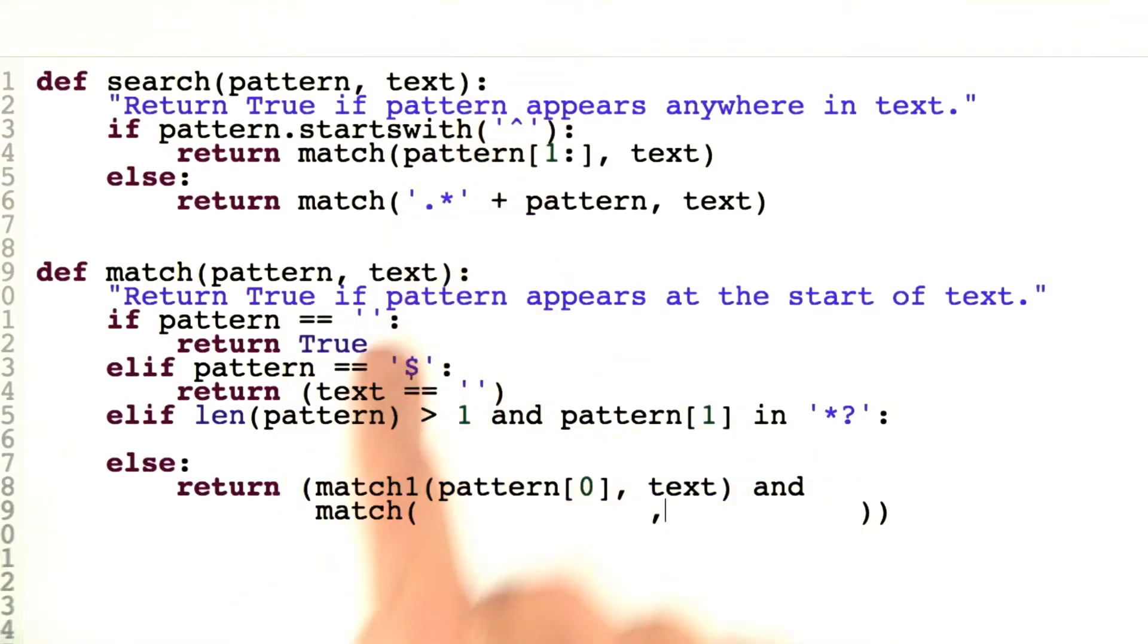So this is saying we don't have a special character here, except maybe a dot and so we have like B followed by A. We want to match the B against the text and then we want to match the A against something else. So fill in for me here what I should be matching against to match the rest of the pattern against the rest of the text.